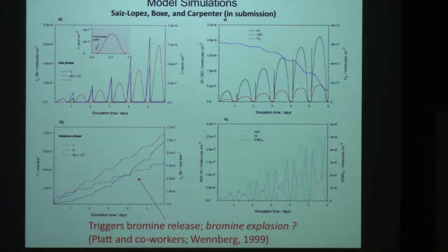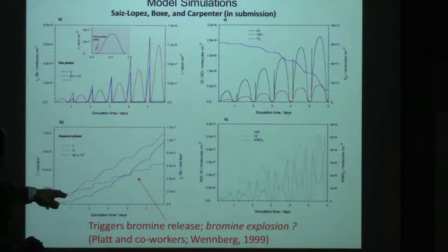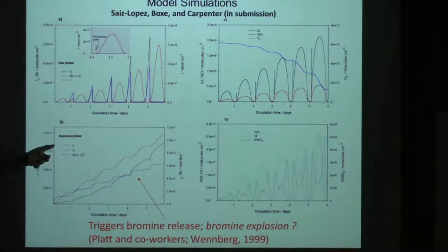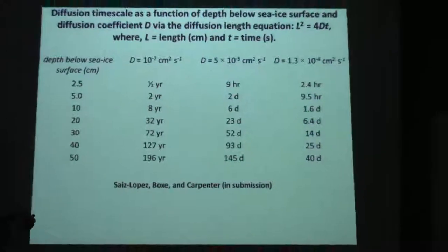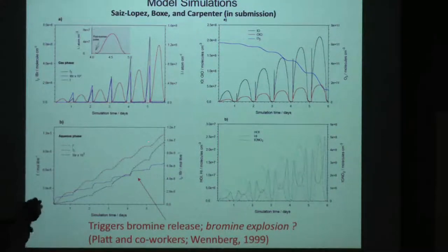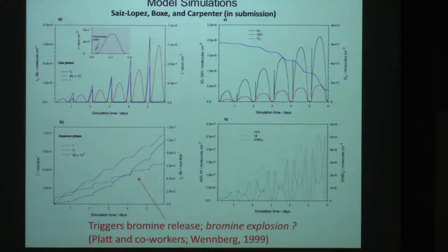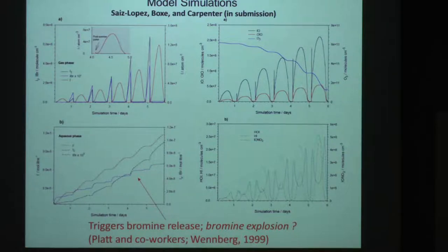We conducted these simulations, and this plot represents the evolution of the aqueous phase components — iodide, I₂, and IBr. This other plot represents the evolution of I₂ as a function of time over six days. The measurements we were matching show that the peak of iodine release approaches at about 65 to 70 days after polar sunrise. We used a conservative way of parameterizing the model.